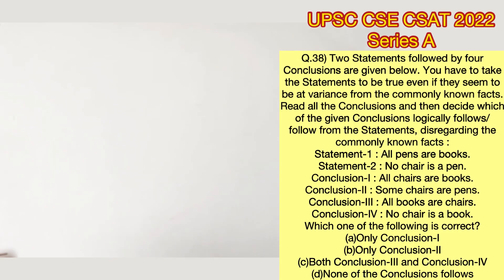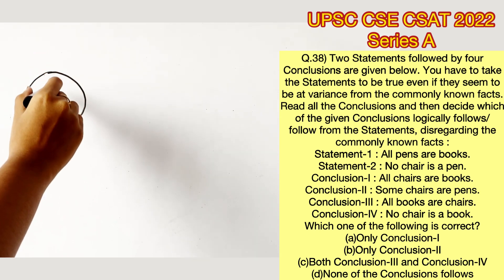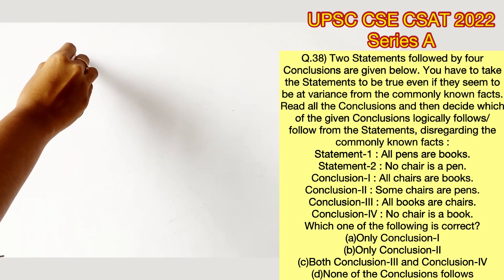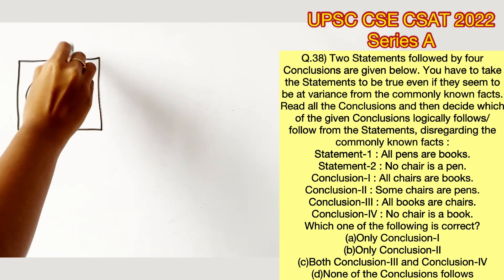Let's solve this sum. We are going to use a Venn diagram to solve this sum. The first statement says that all pens are books, depicting pens with a circle, depicting books with a square.